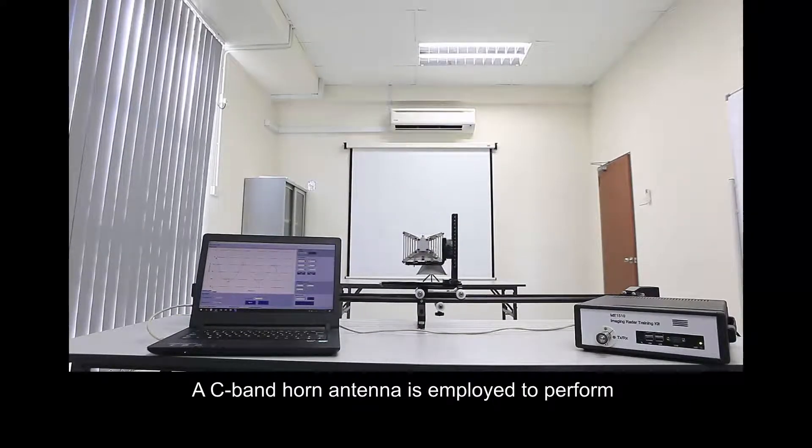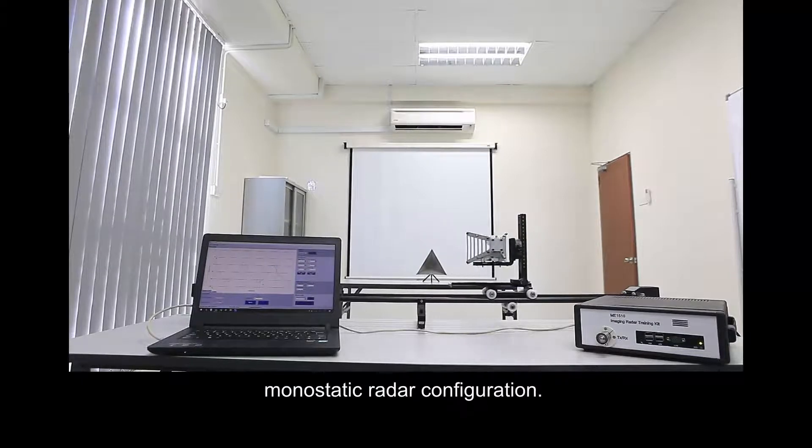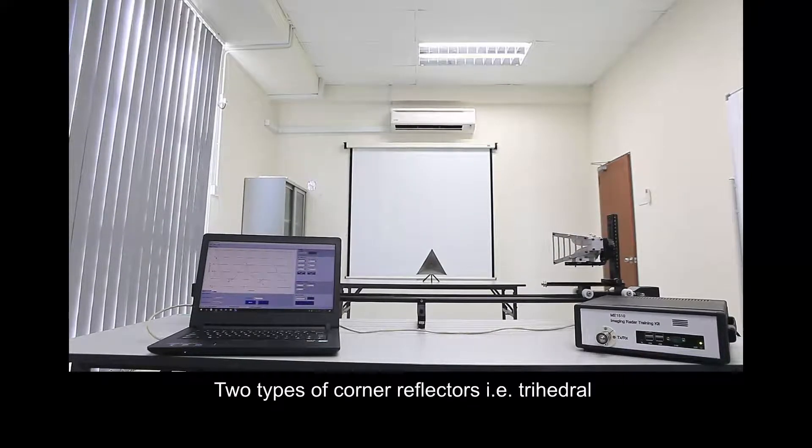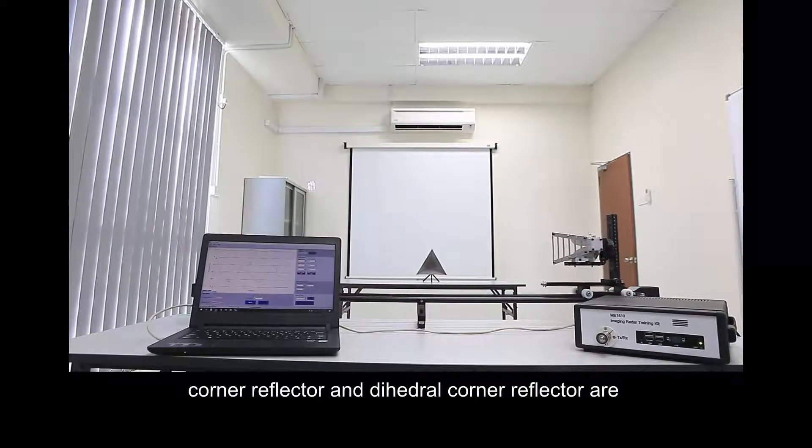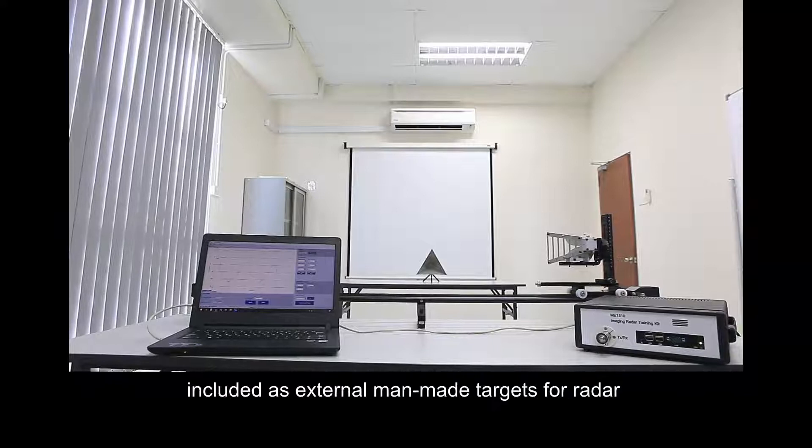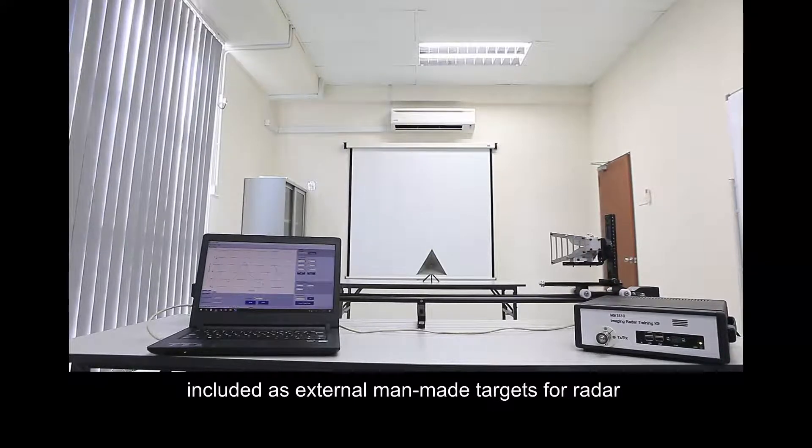A C-band horn antenna is employed to perform monostatic radar configuration. Two types of corner reflectors, trihedral corner reflector and dihedral corner reflector, are included as external man-made targets for radar measurements.